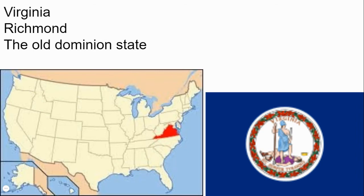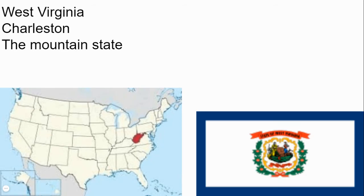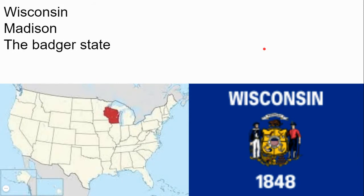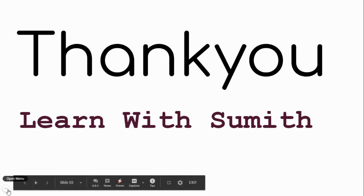Vermont is the state and Montpelier is its capital and the Green Mountain State. The state is Virginia — Richmond is its capital and the Old Dominion State. This state is Washington with Olympia as its capital and the Evergreen State. This state is West Virginia with Charleston as the capital and the Mountain State. This state is Wisconsin and Madison is its capital and the Badger State.